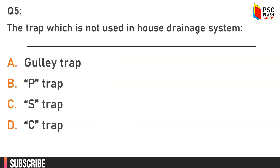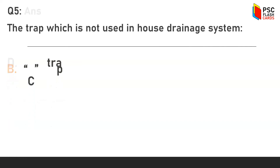Question number five: trap which is not used in house drainage system — option A: gully trap, option B: D trap, option C: S trap, option D: C trap. The answer is option D, C trap.